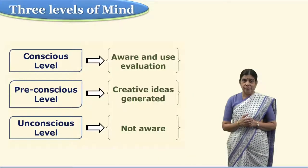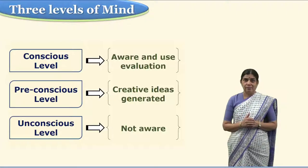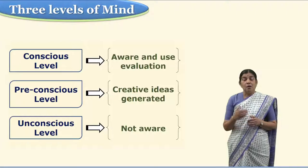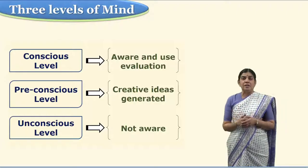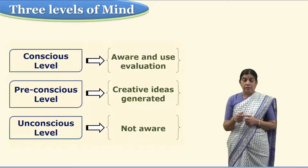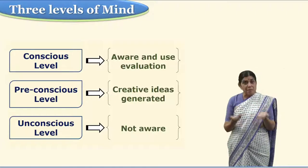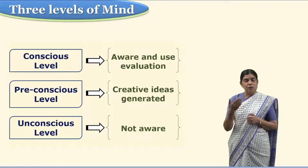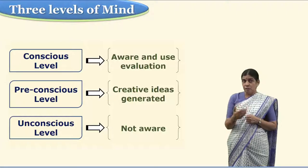According to Gordon, there are three levels of mind. The first, outermost level is the conscious level — we are always aware about this level. But at the same time, we have evaluation at the back of our mind. The moment we generate a new idea, our mind starts thinking about evaluation of it: whether it is feasible, whether it is practical, whether I can really implement this idea. And that is why if we just go by this conscious level, we are not going to create or implement new ideas.